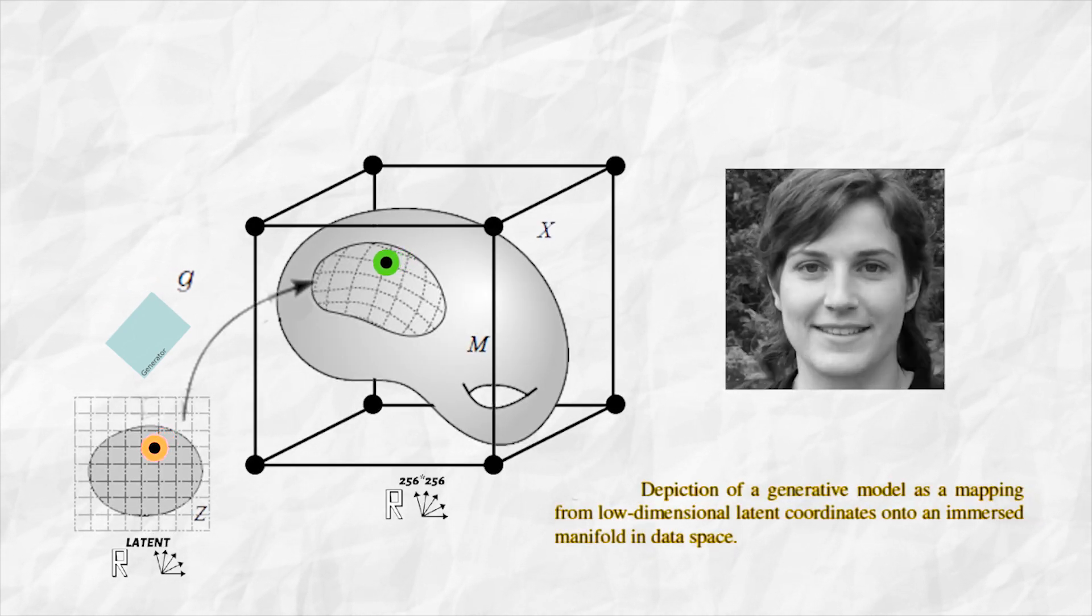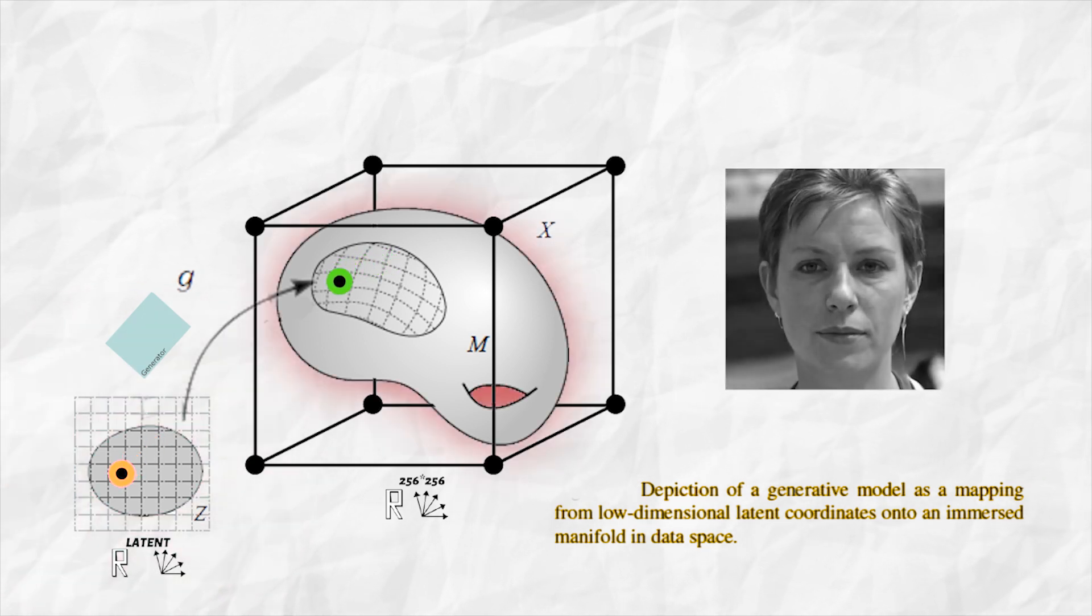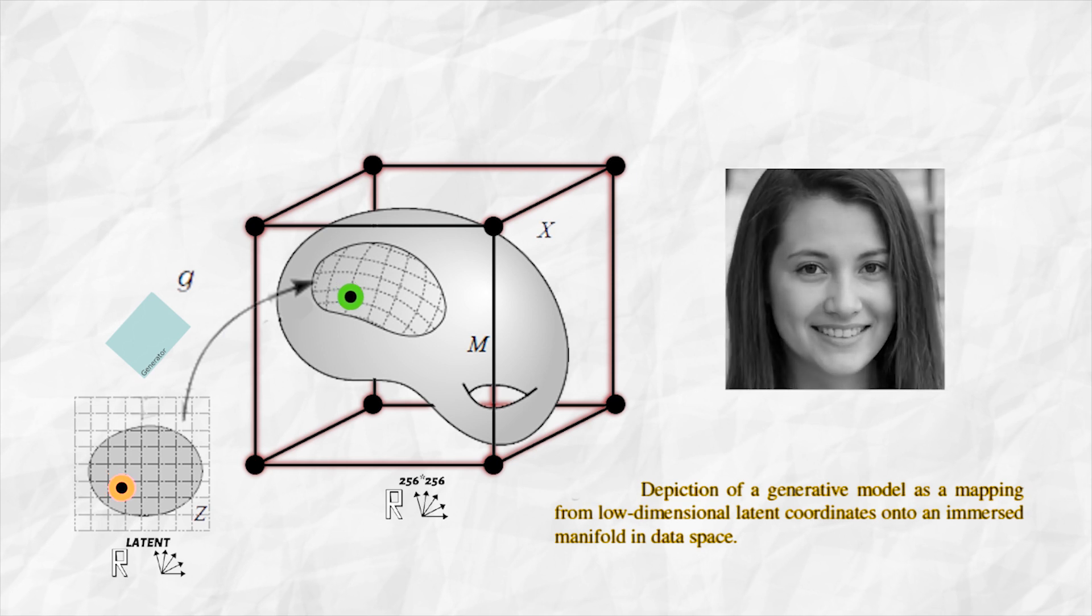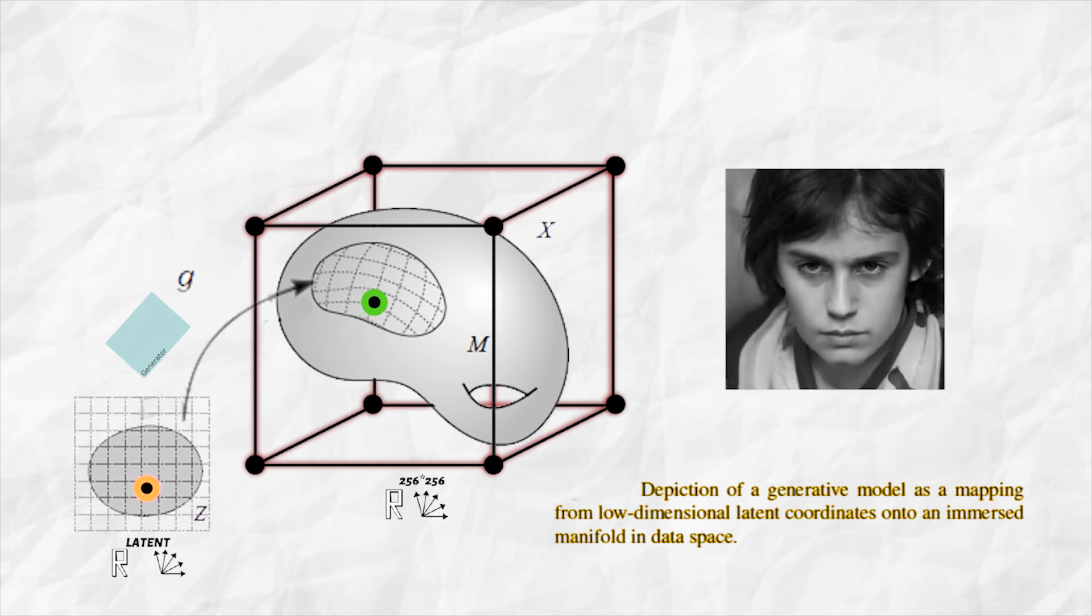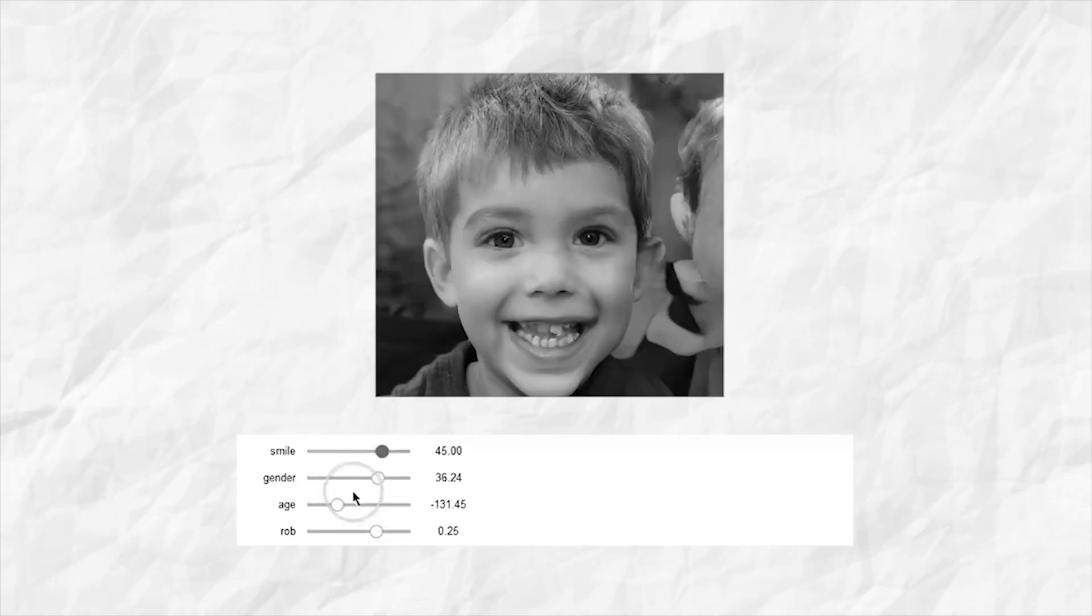Moving in some direction in the latent space results in moving in some direction on the manifold in the high dimensional pixel space. We don't explicitly define this mapping. It is learnt as an optimization task. Getting more control over the features of the generated images is an area of ongoing research.